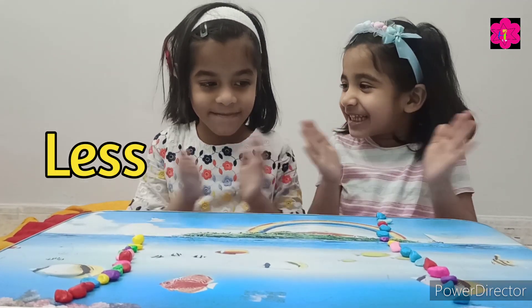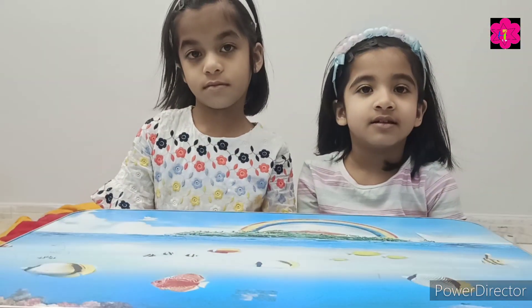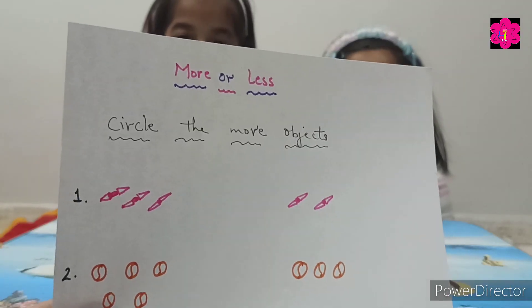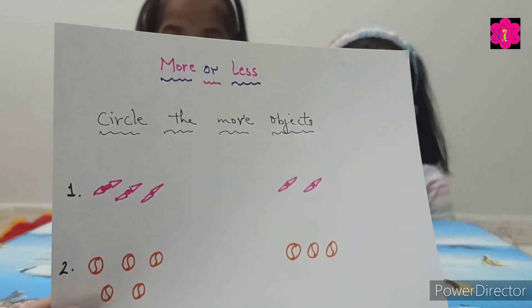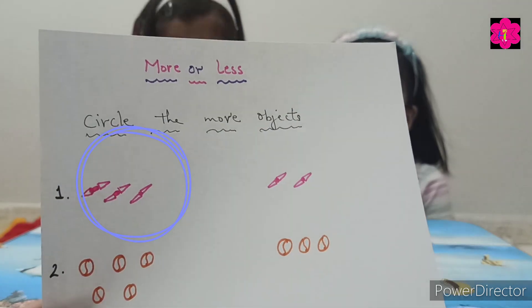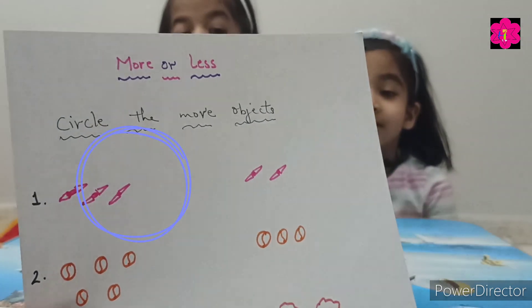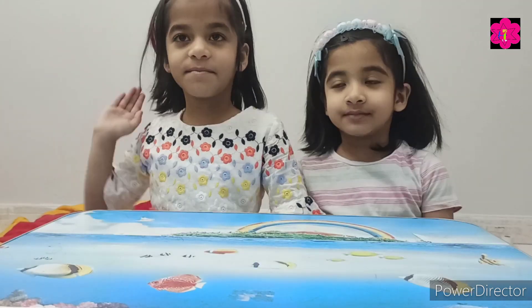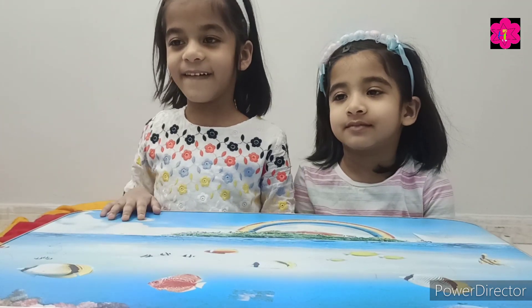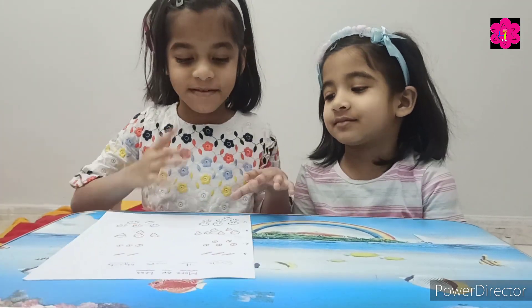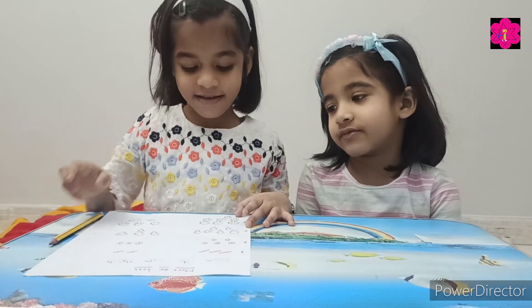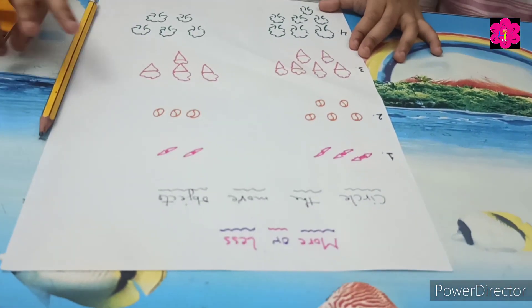Clap yourself! Moving on to the next activity! So in this next activity, you have to circle the object that has more. Which one has more — you have to circle it. Who's going to be first? Okay Muntah, here is your sheet and here is your pencil. So number one, which one has more? One, two, three — very good!